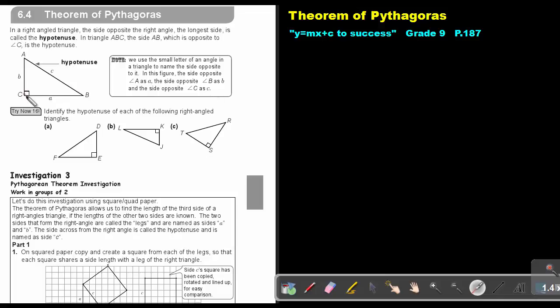And then opposite the angle C will be the side small c, the side AB. So it can either be AB or you can use the small letter C.